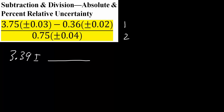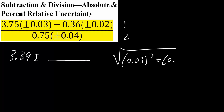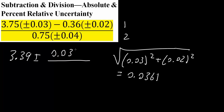For addition and subtraction, to get the absolute uncertainty is pretty easy. We take the square root of 0.03 squared plus 0.02 squared, and what we would get is 0.0361. So we write that down: 0.0361.